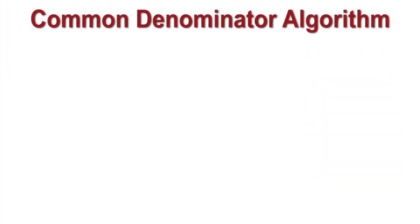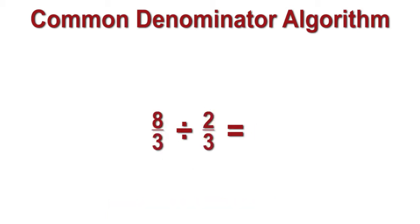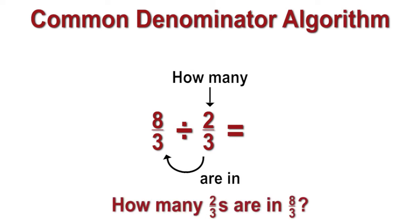The common denominator algorithm is a useful strategy for dividing fractions. In the problem 8 divided by 2, the question is, how many twos are in eight? It is the same with fractions. In the problem 8/3 divided by 2/3, the question is, how many two-thirds are in eight-thirds? In both cases, the answer is four.